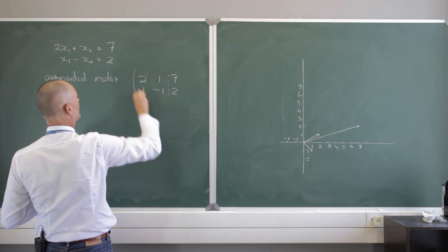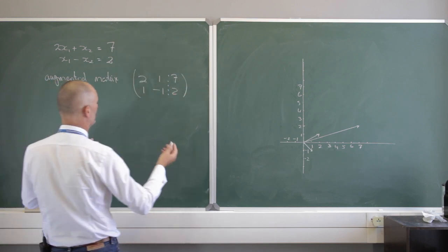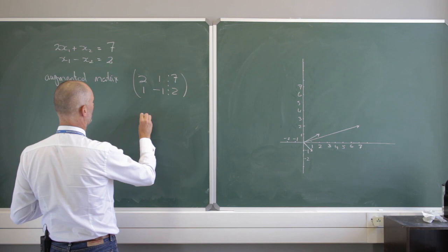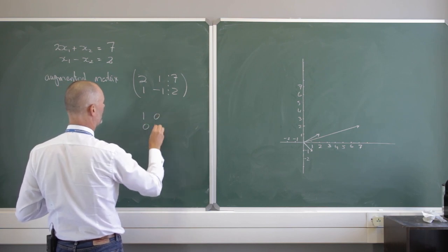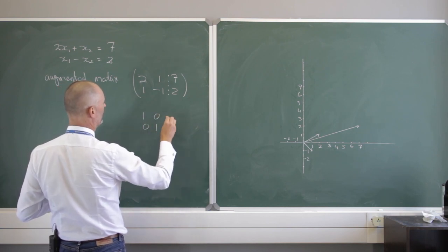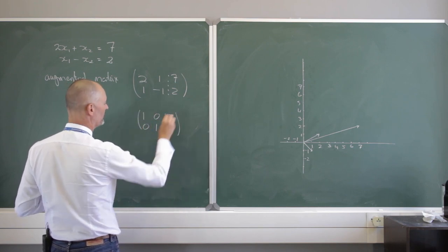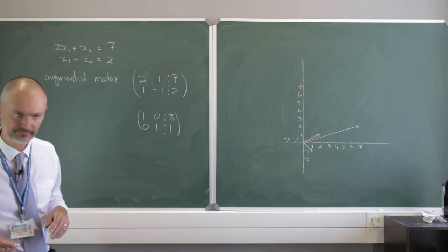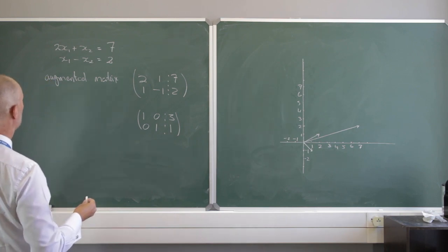If we do Gauss-Jordan elimination I get to the identity: 1, 0, 0, 1 and I get 3 and 1, indicating that x sub 1 must be 3 and x sub 2 must be 1. So that's one way of looking at it.